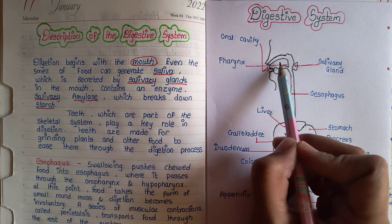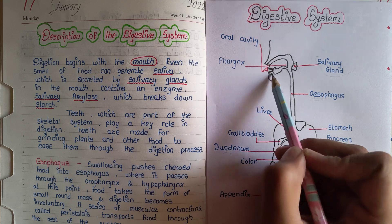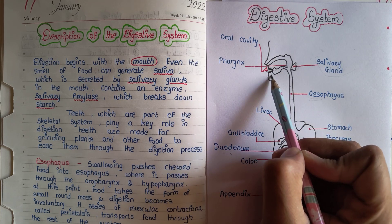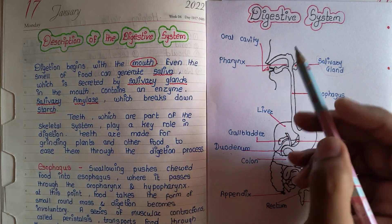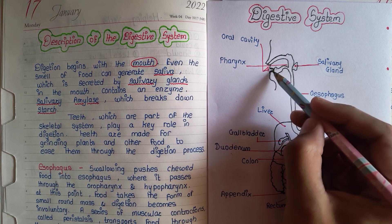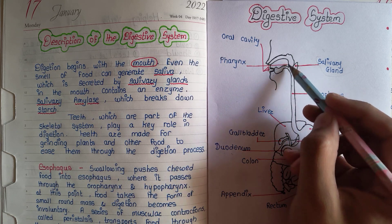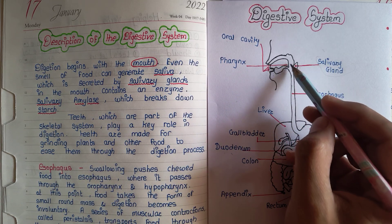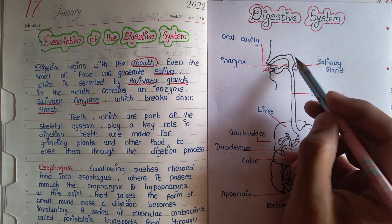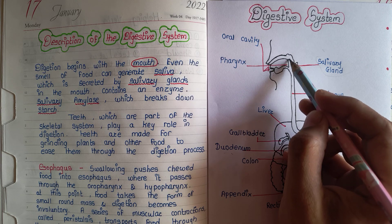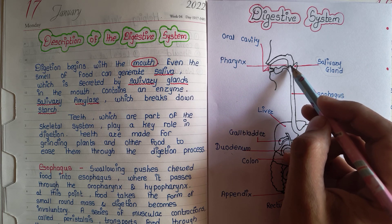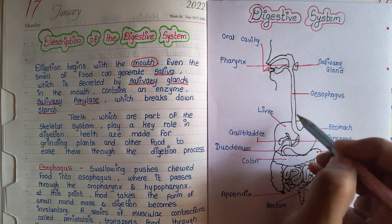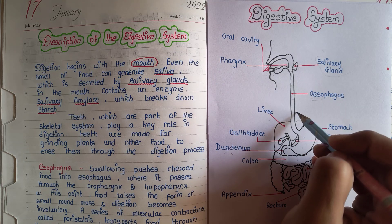In the last lecture, we looked at the first part of our digestive system, which is the mouth. Whatever we are eating is mixed up with the salivary gland, broken down, and then swallowing moves it towards the esophagus.